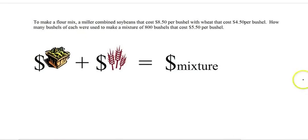And this works the same with dollars. If you're still mixing anything, it's the same setup. So just to show you one with money. So we have soybeans and we're mixing them with the wheat to get a mixture of the two. So if you read it, a Miller combines soybeans that cost $8.50 with wheat that costs $4.50. How many bushels of each, so that's x, to make 800 bushels at $5.50.